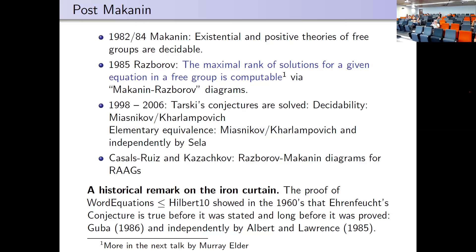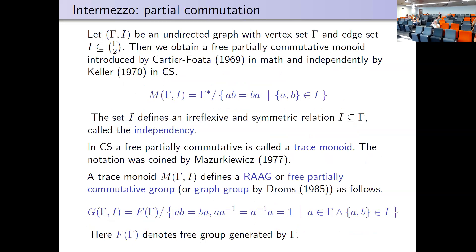The program to prove Hilbert's Tenth undecidable via word equations fully failed, because Makanin proved word equations decidable. After that, the positive theory became decidable, Razborov proved that the maximal rank of solutions in a given equation in a free group is computable. Then Tarski's conjecture about free groups was solved by Myasnikov–Kharlampovich and Sela. Myasnikov–Kharlampovich and Ilia Kazakov also did it for right-angled Artin groups, which is how I became involved.